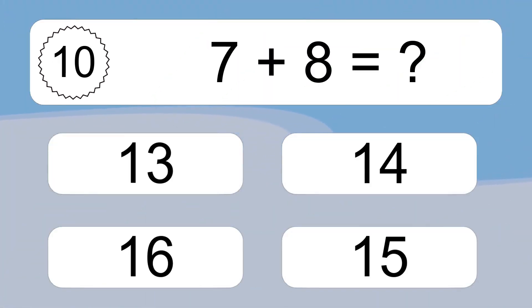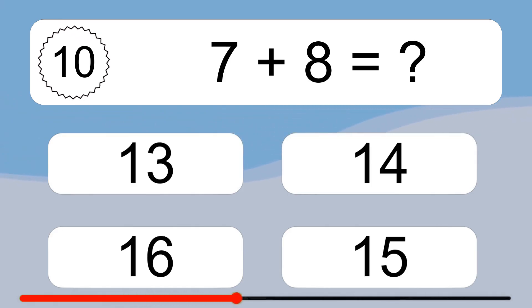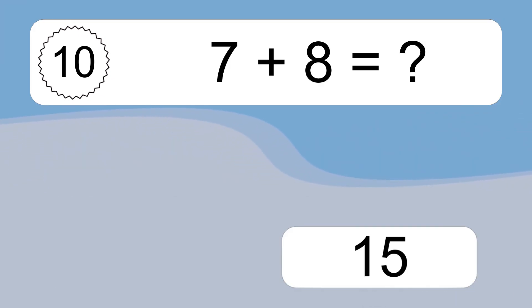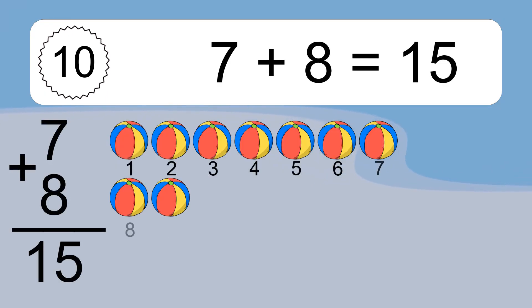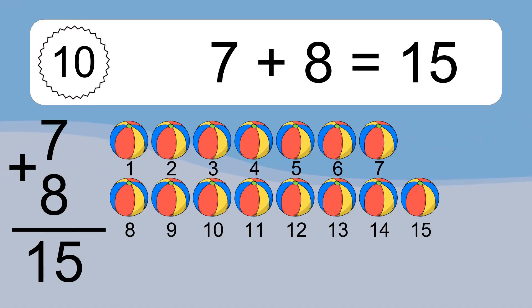7 plus 8 equals what? 7 plus 8 equals 15. Let's count it. 1, 2, 3, 4, 5, 6, 7, 8, 9, 10, 11, 12, 13, 14, 15.